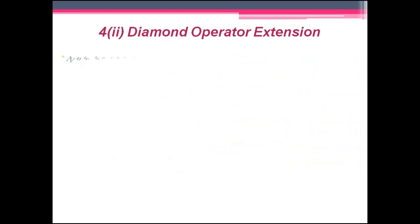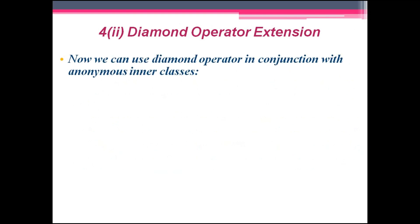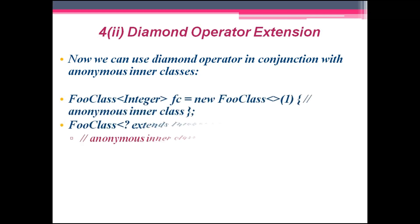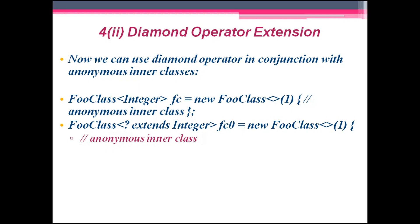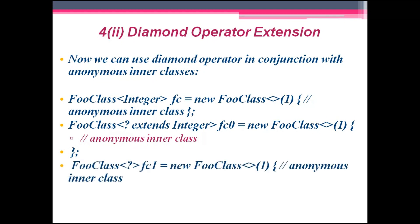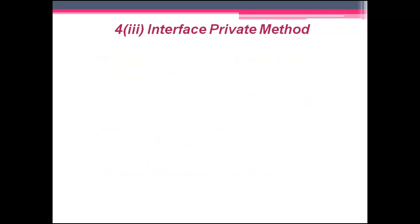The second language change is the diamond operator. Now we can use the diamond operator in conjunction with anonymous inner classes, which was not possible before. For example: FooClass<Integer> fc = new FooClass<>() { ... } creates an anonymous inner class using the diamond operator. Similarly, FooClass fc1 = new FooClass<>() { ... } is also supported.